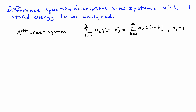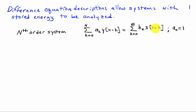We can define an nth-order difference equation as the sum from k equals 0 to n of coefficients a_k times y at n minus k, where y is the output, equal to the sum from k equals 0 to m of coefficients b_k times the input x at n minus k. Here we assume for convenience that a_0 is normalized to be equal to 1.